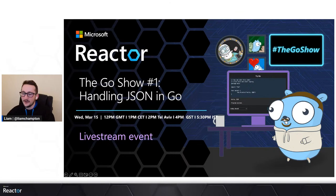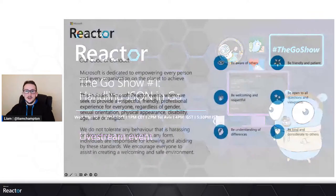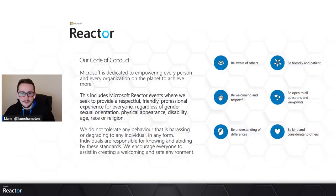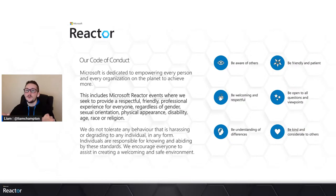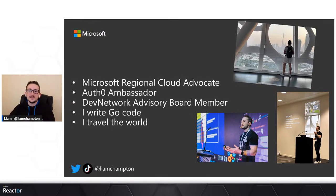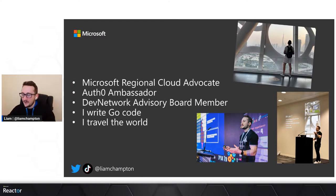Let's jump into it because I don't want to waste any time. Like every single stream, we have a code of conduct — this is a reactor stream after all. Please be aware of others, be kind, be respectful. The chat is completely open for questions, just please ask nice ones. We're all here to learn, it's a learning environment. So who am I? I'm a Microsoft Regional Cloud Advocate, my name is Liam Hampton. I'm an All Zero Ambassador, Dev Network Advisory Board member, I write a lot of Go code, and I like to travel the world.